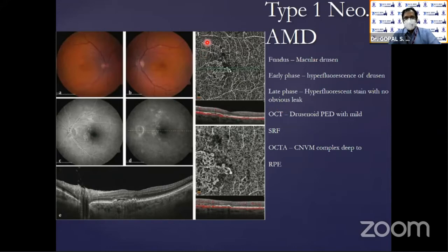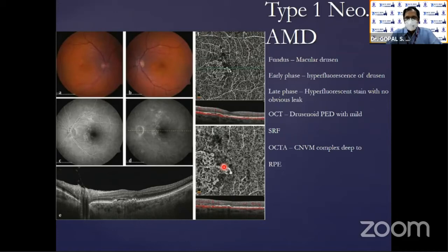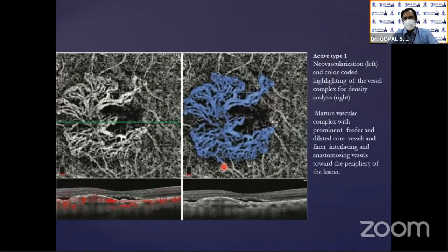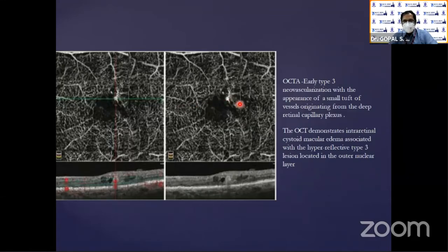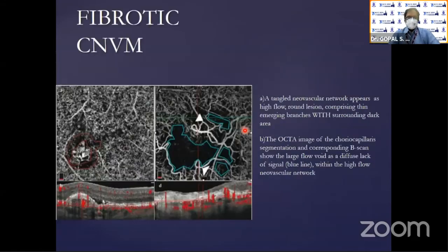Looking at examples of on-face OCTA images, you can see neovascularizations. In fluorescent and ICG angiography you have early, mid, and late phases, whereas in OCTA we have on-face images of the superficial and deep retina to look at anatomical location. You can color-code mature versus immature vessels and segment at different levels. This is a type 2 neovascular AMD, and here you can see type 3 neovascularization. In fibrotic CNVM, you can see large areas of complete flow void.